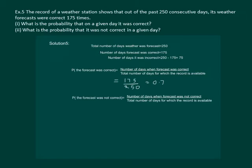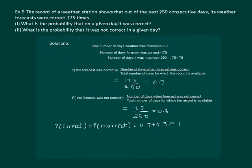Similarly, the probability that the forecast was not correct is given by the ratio: number of days when the forecast was not correct by total number of days for which the record is available, which comes out to be 75 by 250, equal to 0.3. On adding the two probabilities, we get probability that the forecast was correct plus probability that the forecast was incorrect equal to 1, which implies that the two events cover all the possible outcomes of the trial.